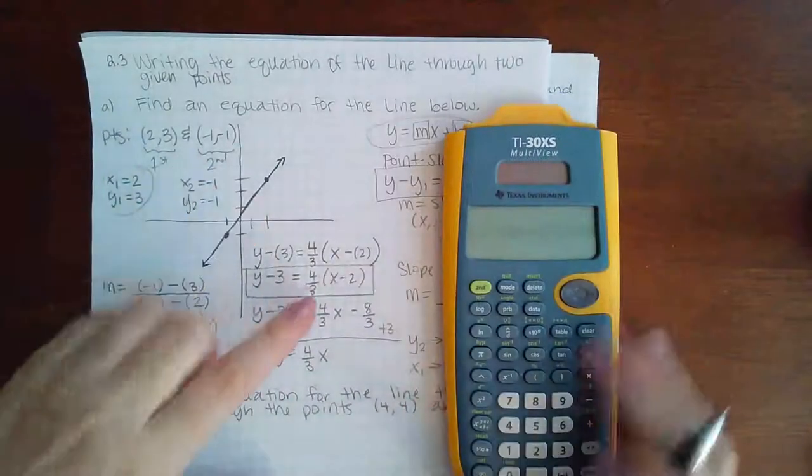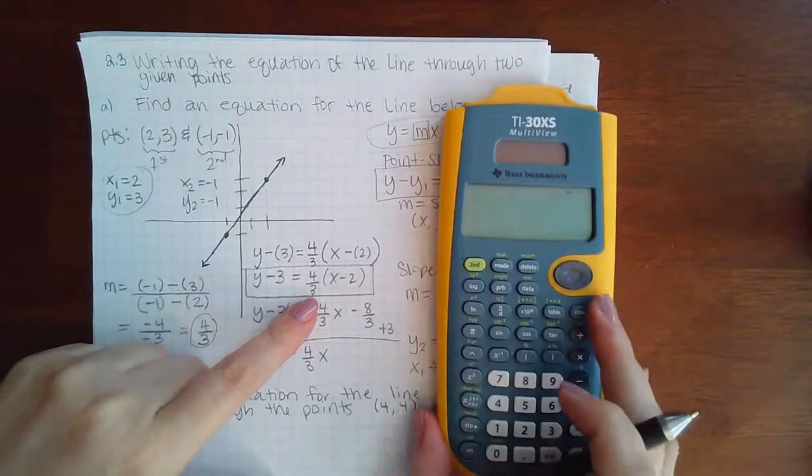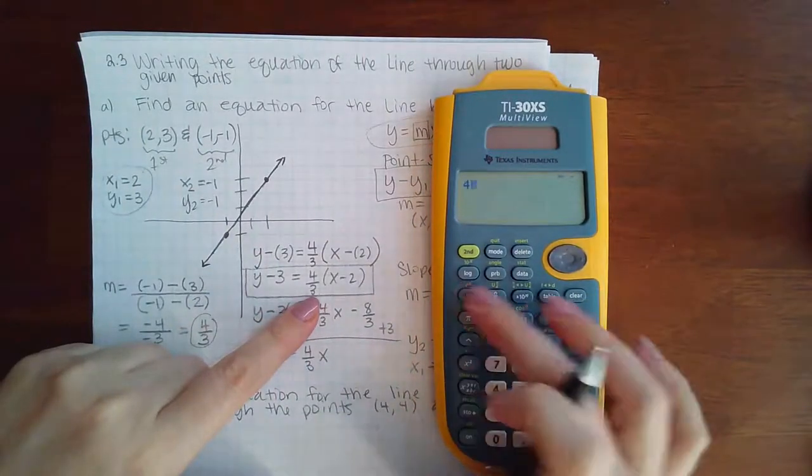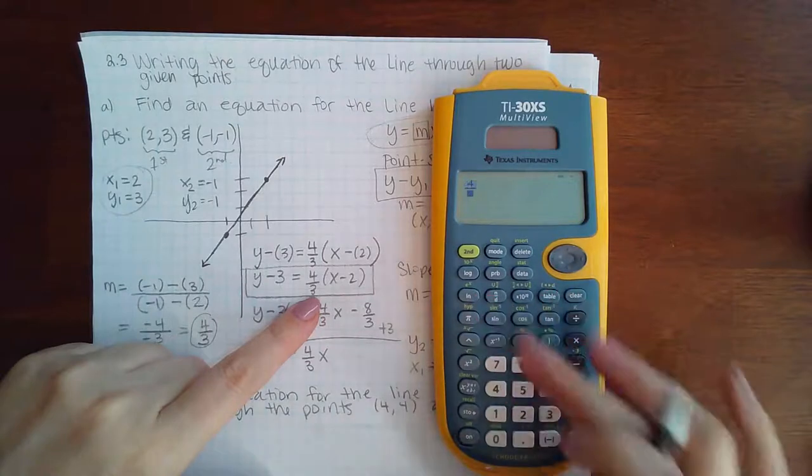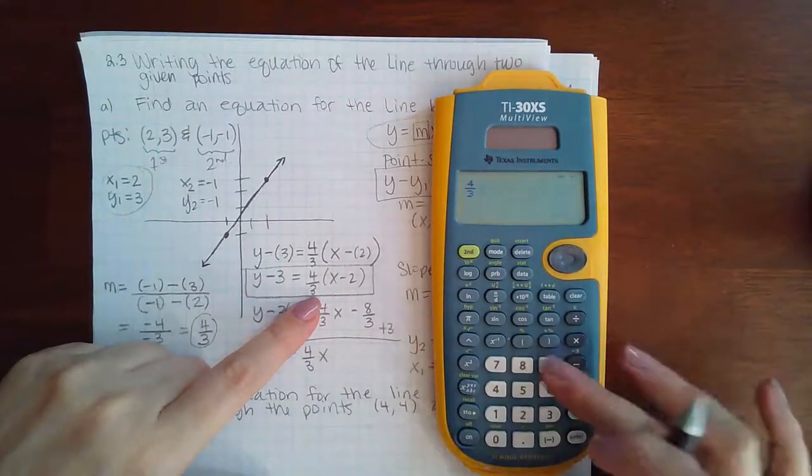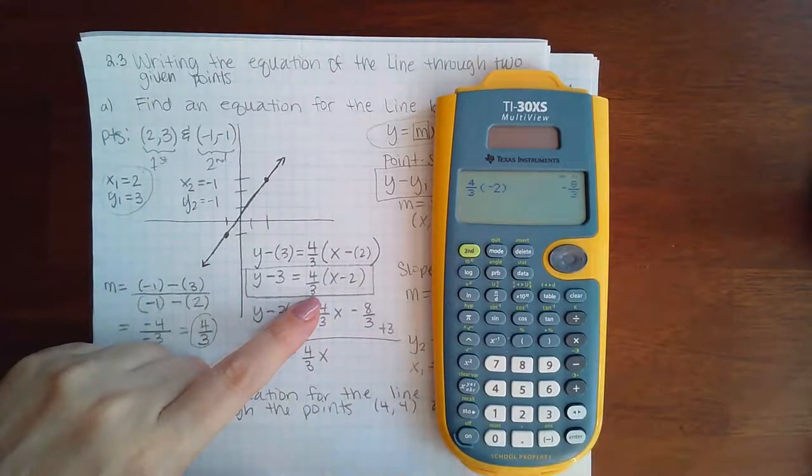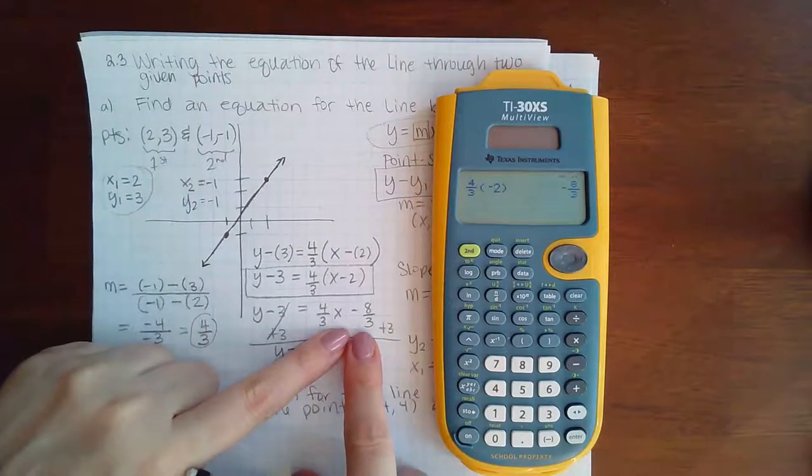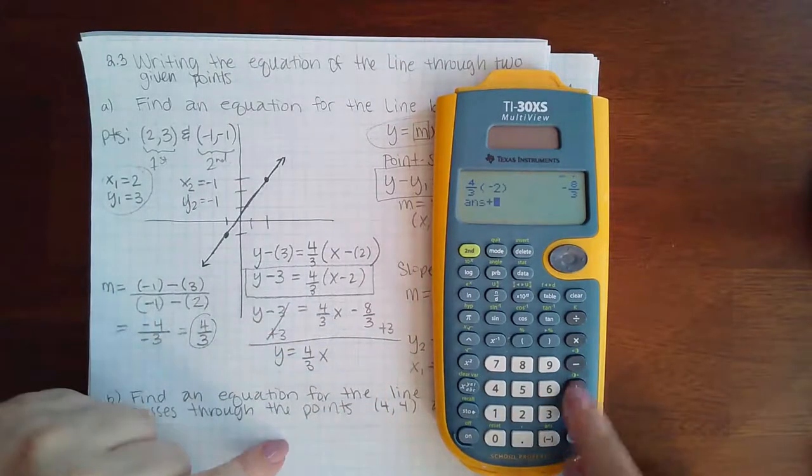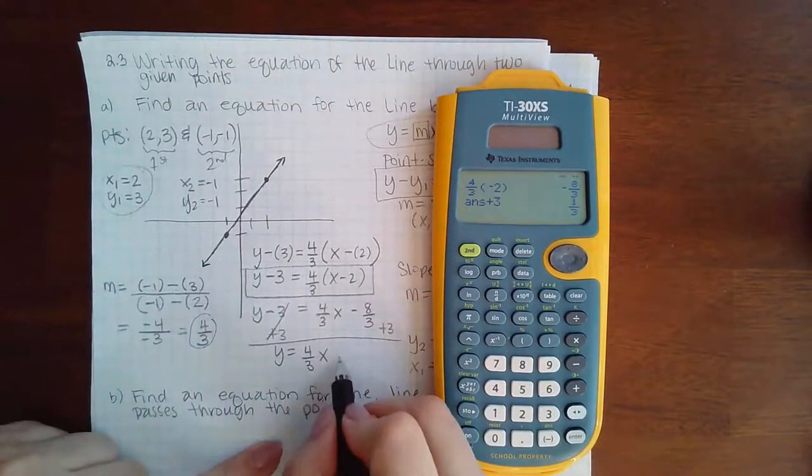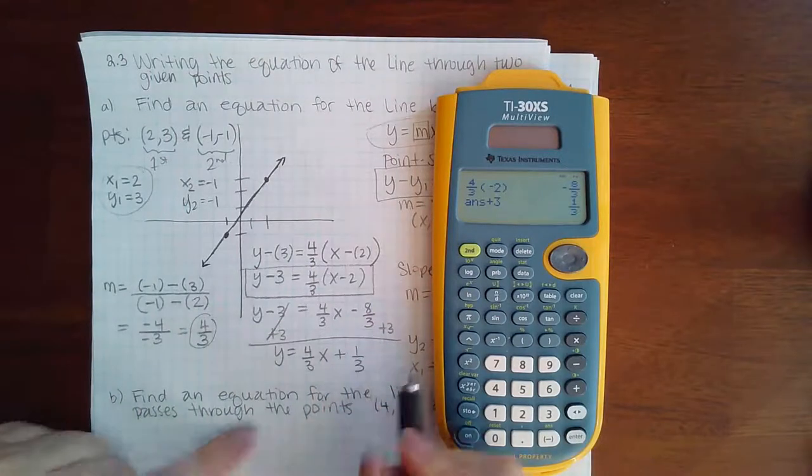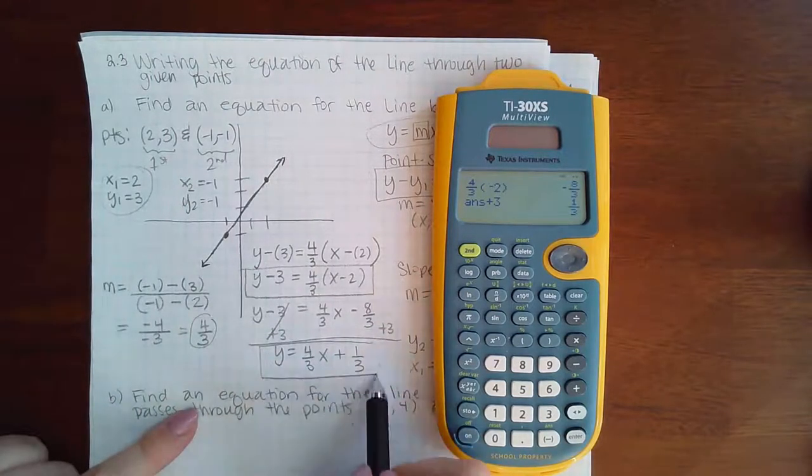And if you're not great with your fractions, you can always use your calculator. Like I can multiply fractions pretty easily. Adding and subtracting is harder because you have to get the common denominators. But 4 thirds times a negative 2 is in fact negative 8 thirds, so that was correct. And then if I add 3 to it, I actually get a positive 1 third.